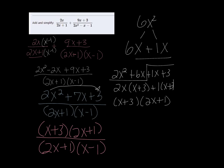Well, obviously these 2x plus 1s can divide out and all I'm left with is x plus 3 over x minus 1.